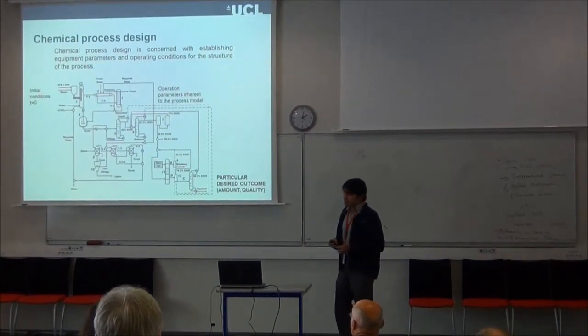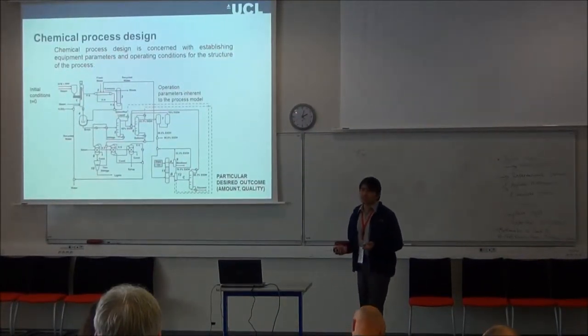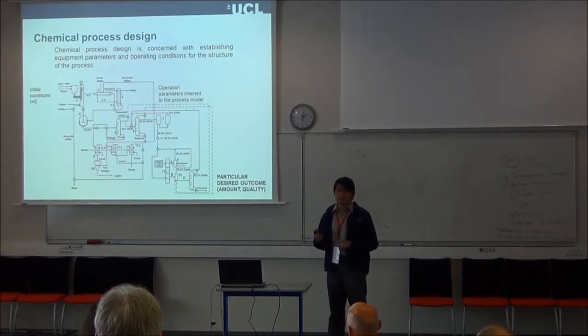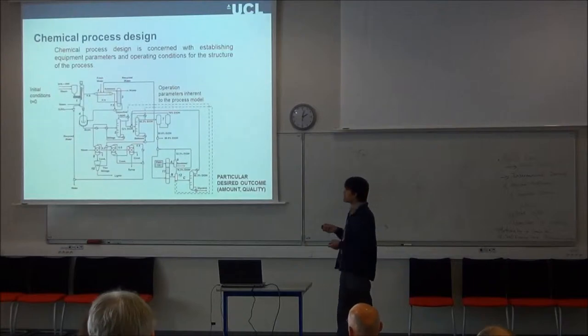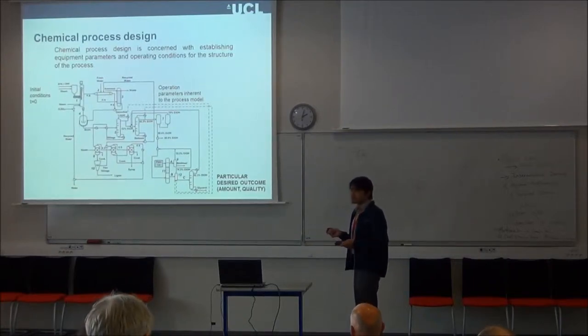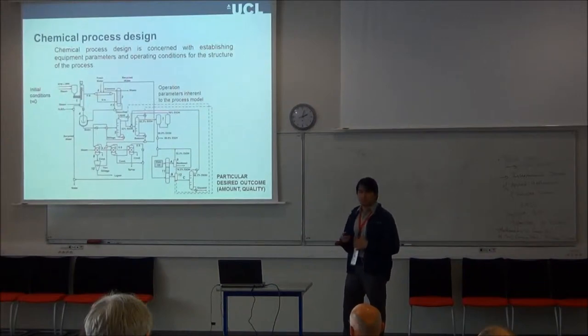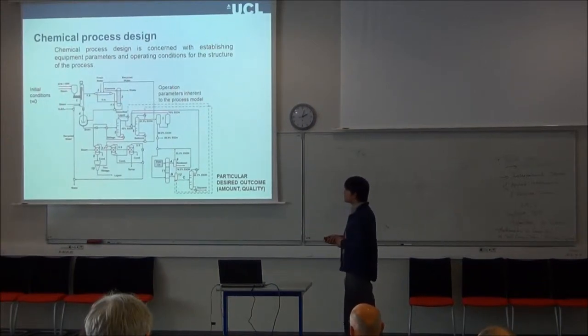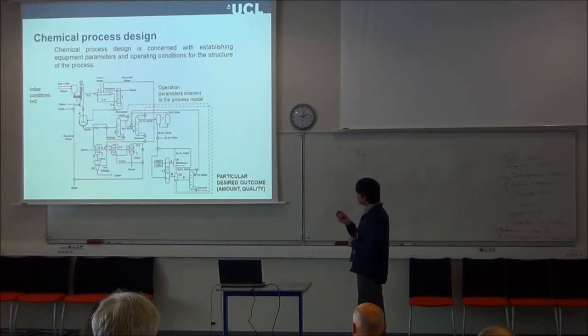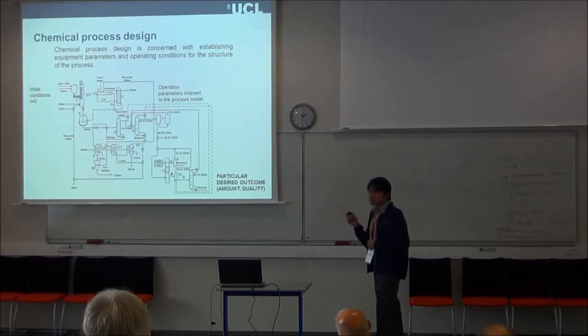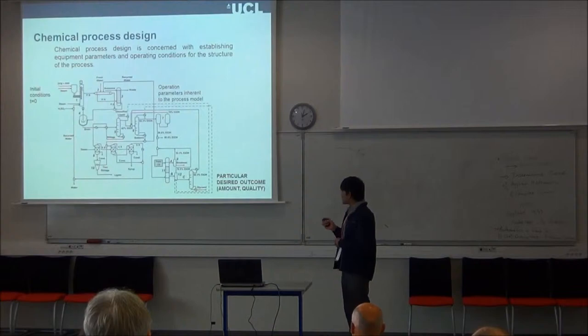So very briefly, chemical process design is concerned with establishing operative parameters and operating conditions for process systems. For example, we have here a flowsheet of a chemical process. Up to now, I'm going to say only that this is a biodiesel production plant. So we have some initial conditions, and for this product we have some operating parameters that are inherent to this particular desired outcome.